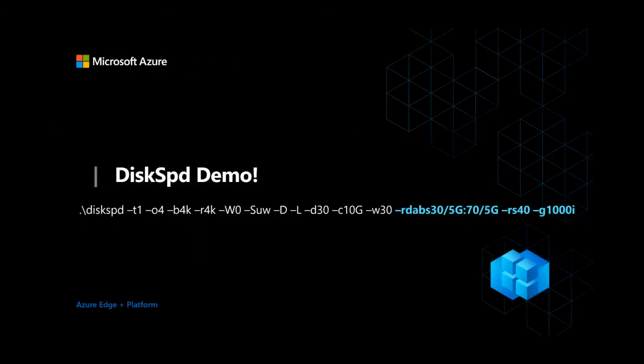Now let's get to the actual demos. As a quick caveat, we won't be covering all the individual updates in these demos, as there are many more minor feature updates as well. But there are a few major ones to focus on, and we'll be releasing articles and documentation detailing each of them. For the diskspd demo, we'll be running a specific set of parameters. Most are the same flags available before — the new ones highlighted are RDABS, RS, and GI.